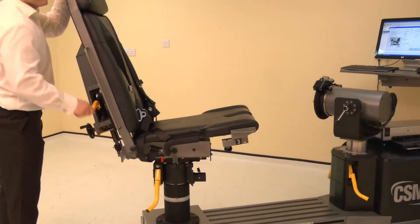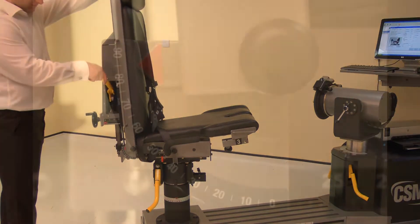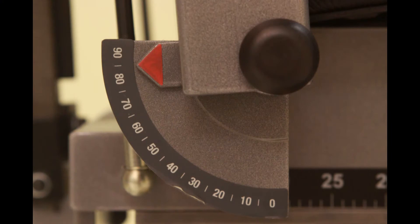To set the chair back angle, lift the locking handle and adjust the chair back. For the knee, adjust the chair back angle to 85 degrees.